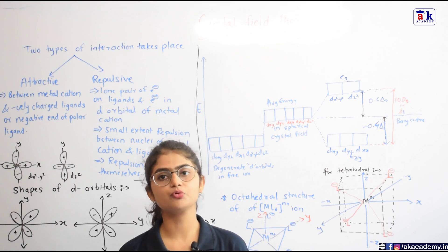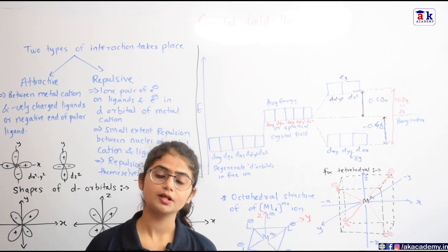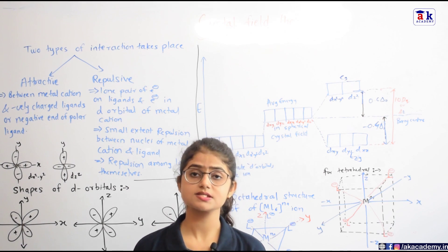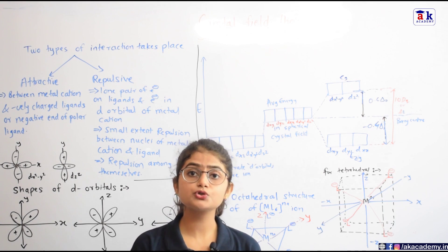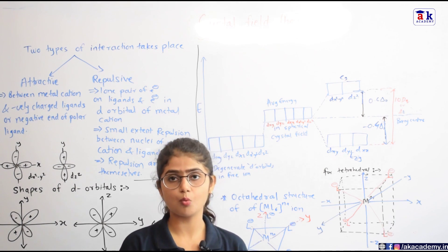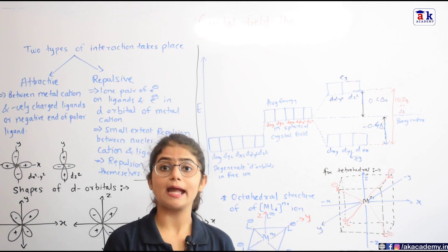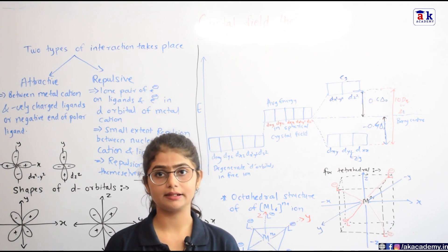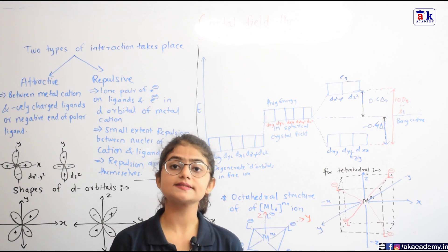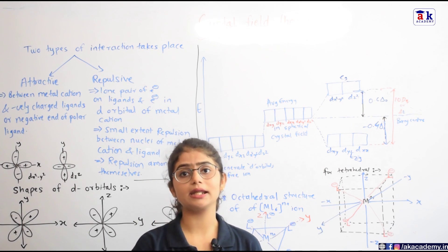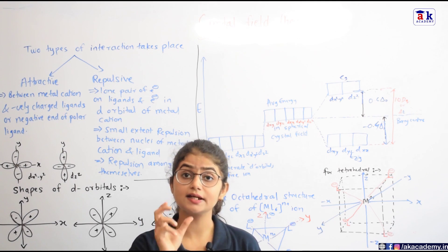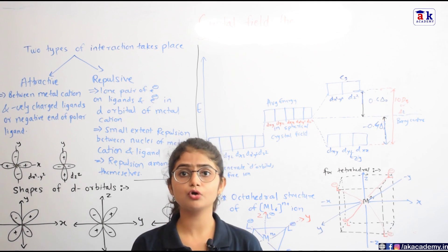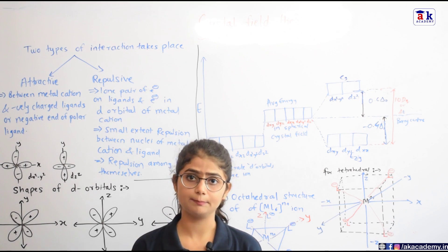All these shortcomings are removed by CFT. CFT says that ionic ligands like OH⁻ and CN⁻ act like negative point charges, and neutral ligands like ammonia and water act like point dipoles where the negative end is directed towards the metal cation. The bonding between the metal cation and the ligand is purely ionic — there is no covalent character and no overlapping of orbitals.